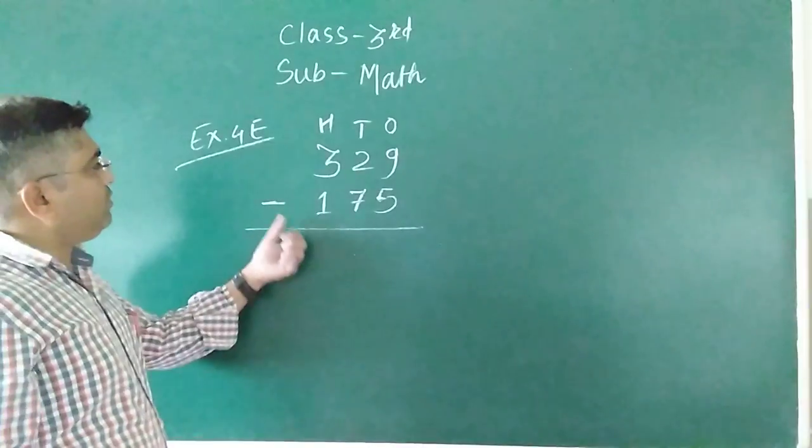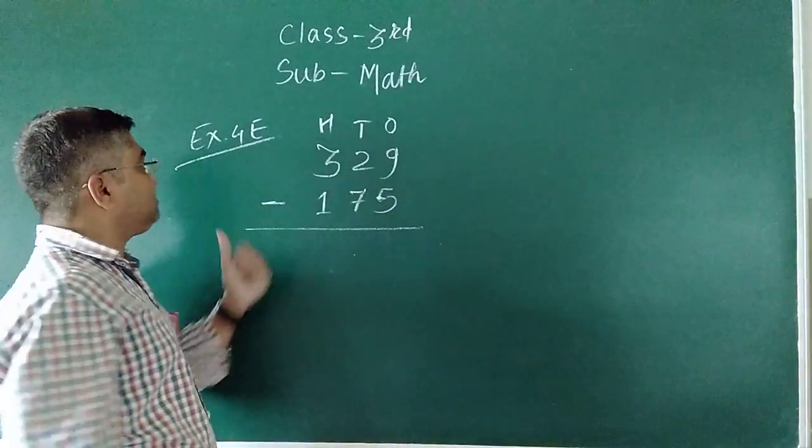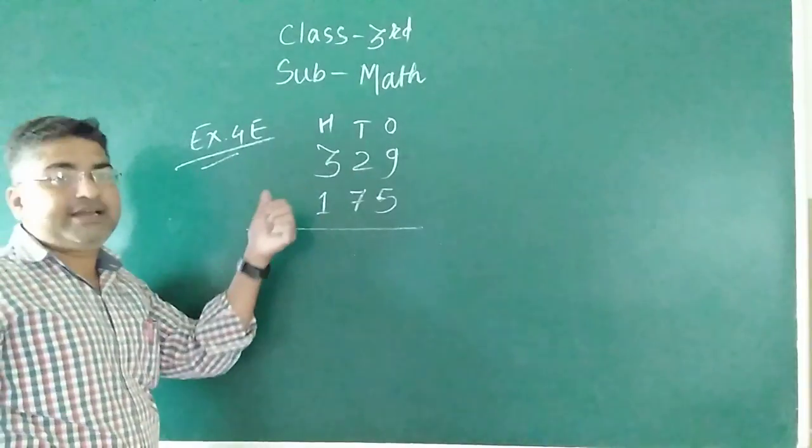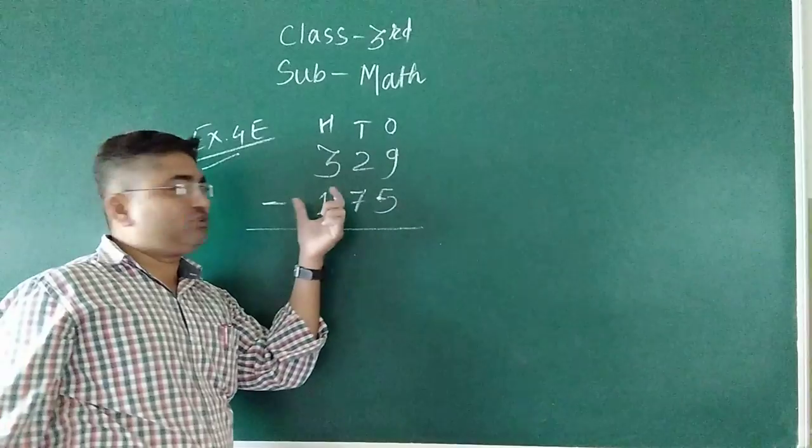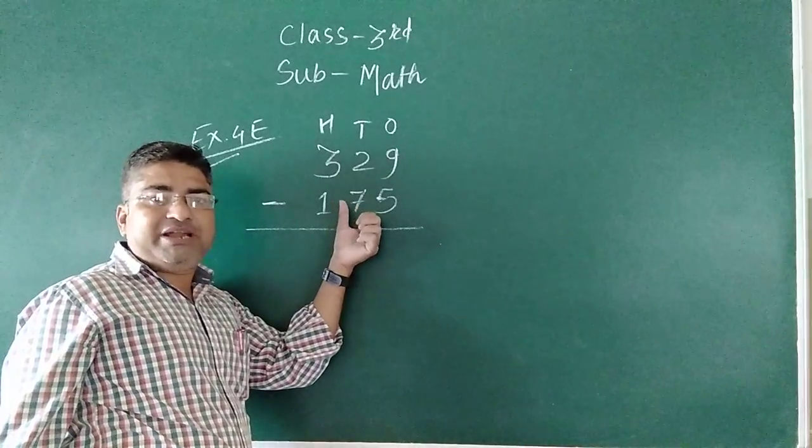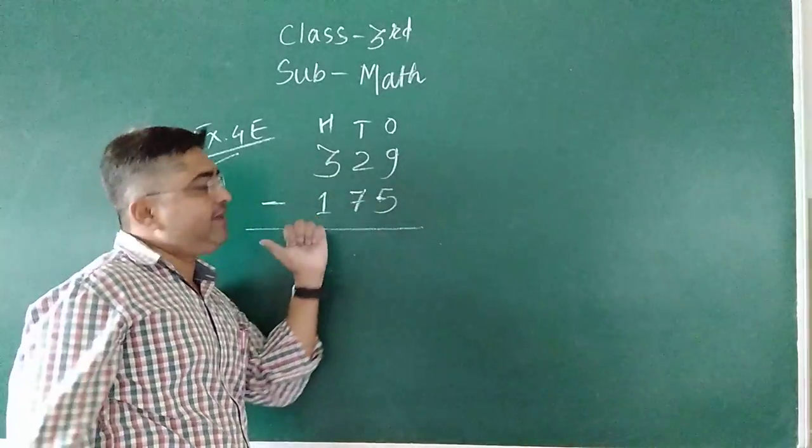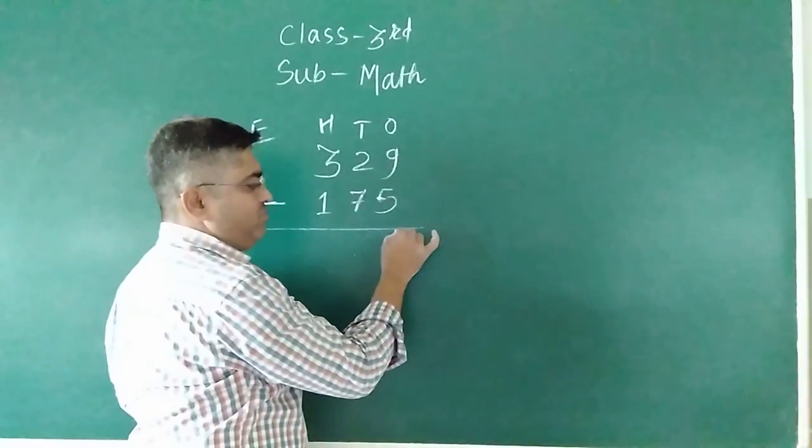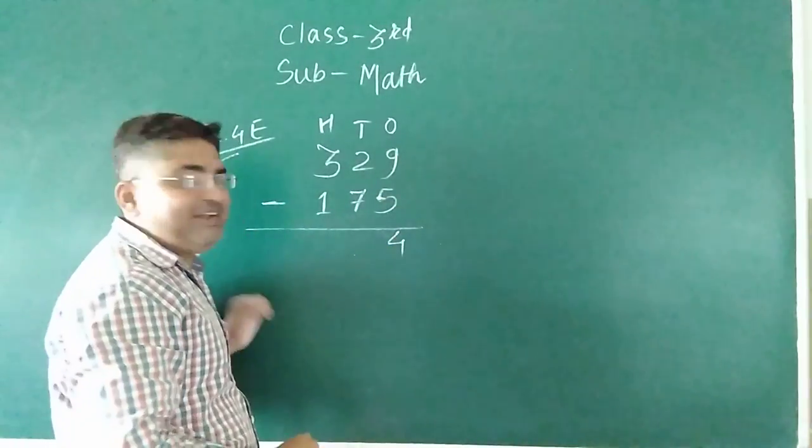So we are coming to Exercise 4E. Here again we check out that. First of all, we can subtract this number and we can check out that our answer is correct or not. See here, 9 minus 5 is 4.